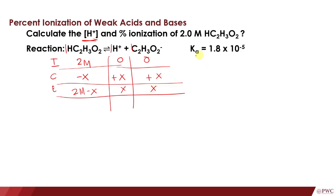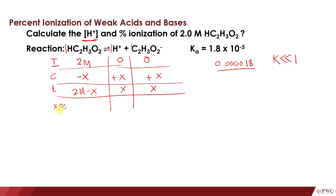We're going to make an assumption because our Ka is very, very small — 1.8 × 10⁻⁵, which equals 0.000018. When Ka is much less than 1, this favors the reactants, meaning there is much more reactant compared to product. There is almost no change in the given amount of the reactant. So we assume X is approximately equal to 0, meaning 2M − X ≈ 2M.